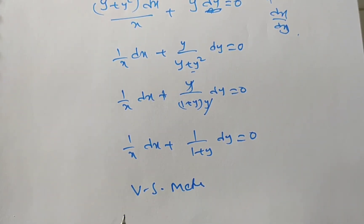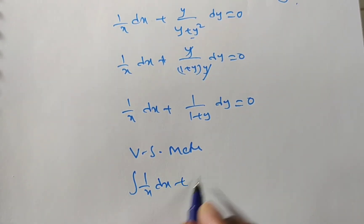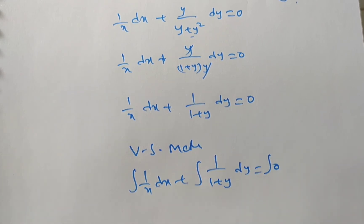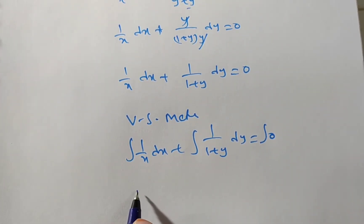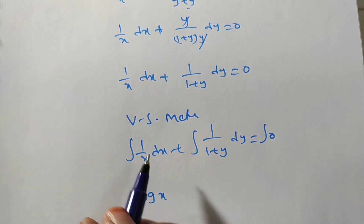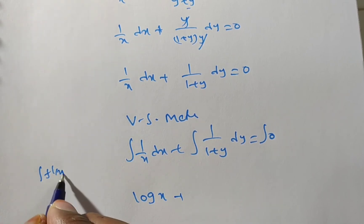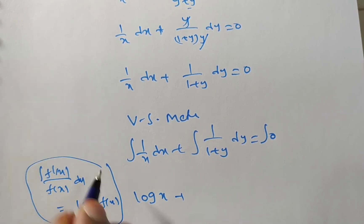Integrating on both sides: integral of (1/x)dx plus integral of 1/(1 + y) dy equals a constant. You can write plus c, or since both terms are logarithmic, write log c. The integration of 1/x is log x, because the derivative of the denominator is in the numerator. We use the formula: integral of f'(x)/f(x) dx = log|f(x)|.